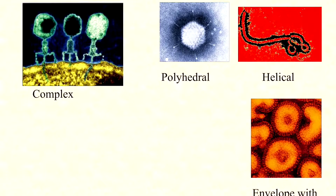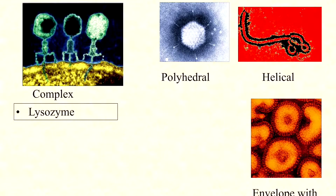Phage are almost never enveloped. Why? Peptidoglycan gets in the way. Budding is the process of release for an enveloped human virus — it has to push through the membrane and take some membrane with it. There's peptidoglycan in the way for bacteria phage, so it's very uncommon for phage to be enveloped, but not at all uncommon for human viruses to be enveloped.